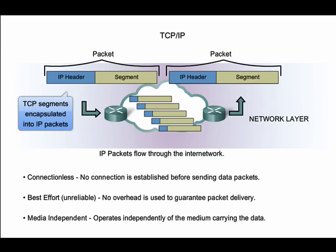IPv4 is currently the most widely used version of IP. IPv6 is being implemented in some areas and will operate alongside IPv4, and eventually it will replace it. IP was designed as a protocol with low overhead. It provides only the functions necessary to deliver a packet from a source to a destination over an interconnected system of networks. There are three main characteristics of IP protocol: it is connectionless, provides best effort delivery, and is media independent.